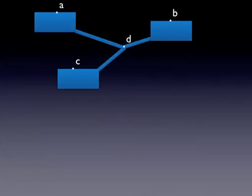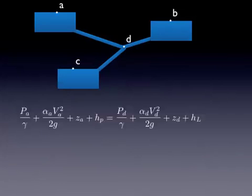Okay, so let's set up our flow equations for each of the pipes. If we look at from reservoir A to junction D, we can write the energy equation at those points.